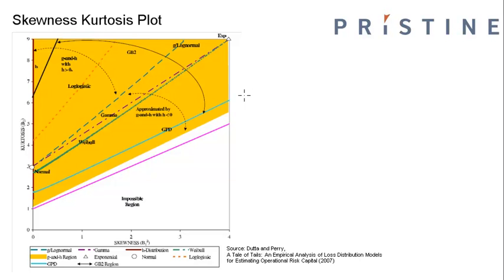Hi, this is Dinesh from Pristine. In this video we will have a look at skewness kurtosis plot. A skewness kurtosis plot shows the various skewness kurtosis combinations that can be taken by different distributions. The more skewness kurtosis combinations a distribution can take, the more flexible it is to fit different types of data sets.